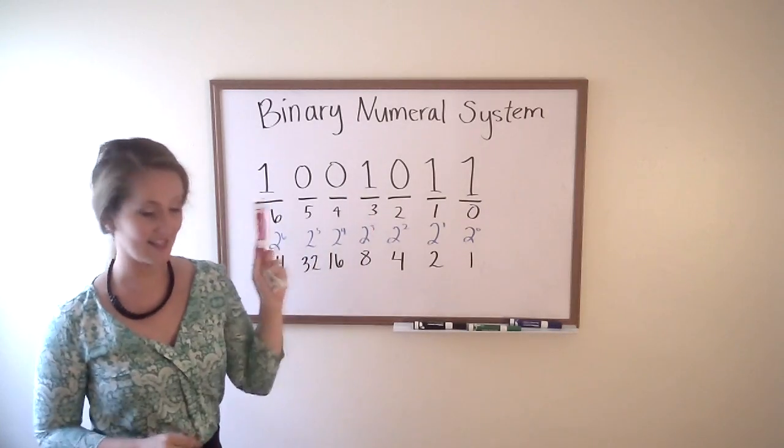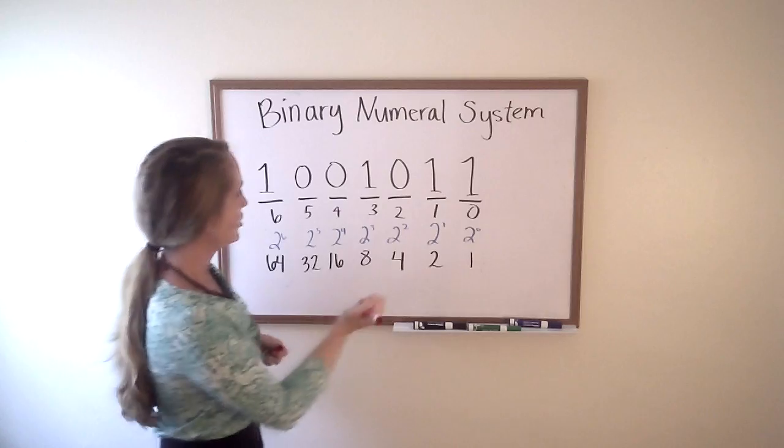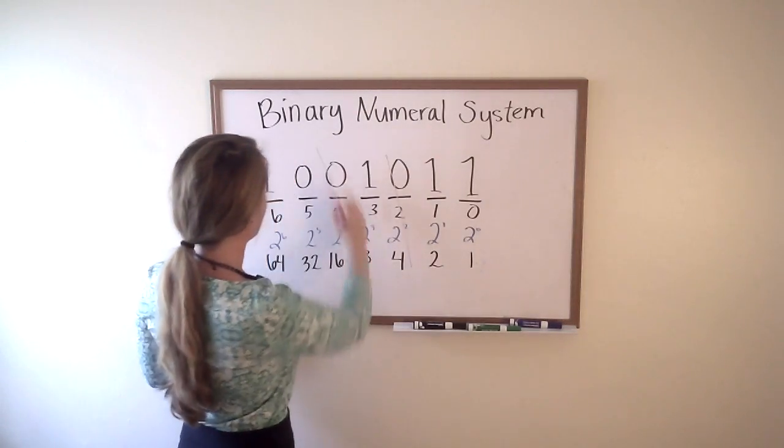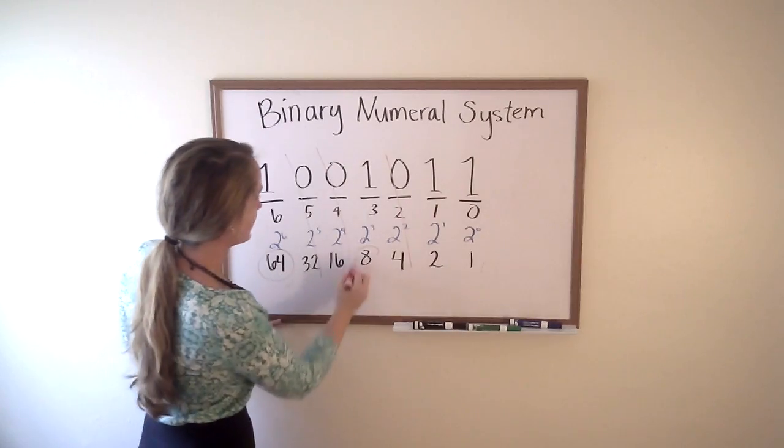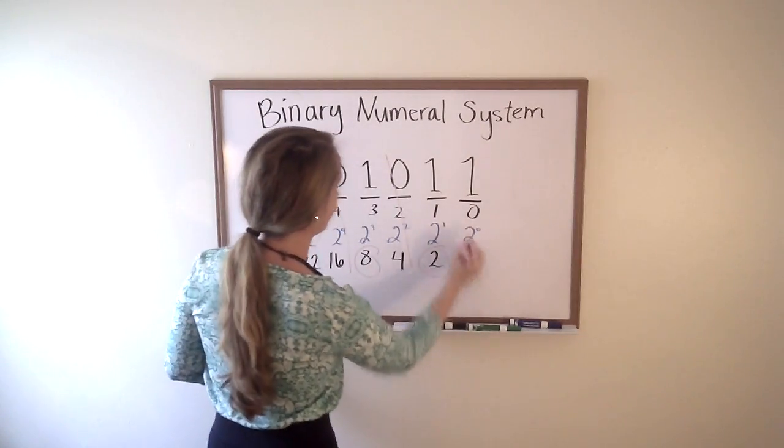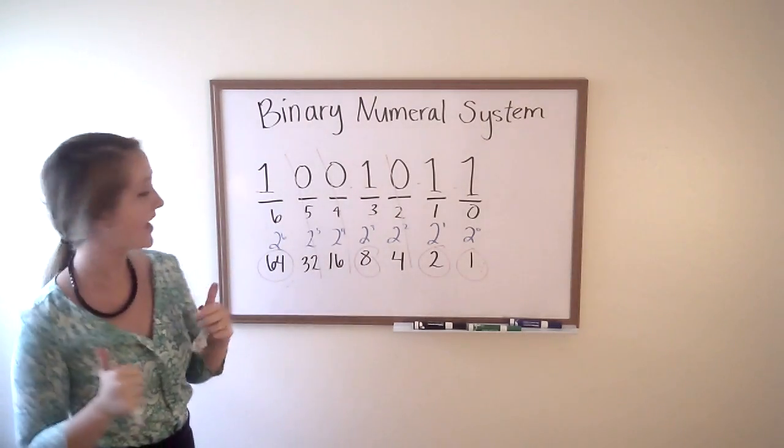The zero is the same thing as like an off switch. One being on, zero being off. So we can go ahead and cross all of these out right here because they're not going to really matter. We want to keep this one, this one, here and here because they have the corresponding ones, which means yes, it's on. We want to keep that number.